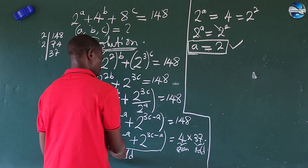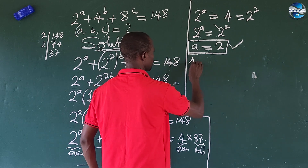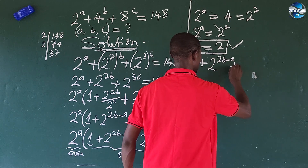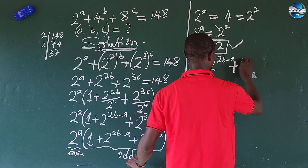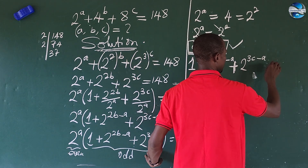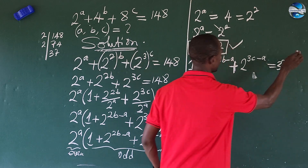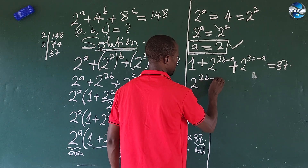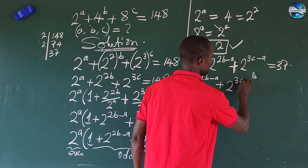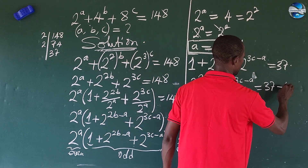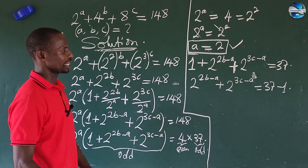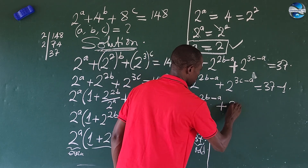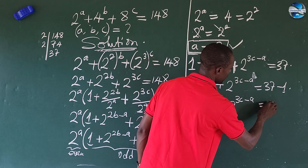Now equating the odd parts: 1 plus 2 to the power of 2B minus A, plus 2 to the power of 3C minus A equals 37. Sending the 1 to the other side gives us 2 to the power of 2B minus A plus 2 to the power of 3C minus A equals 36.